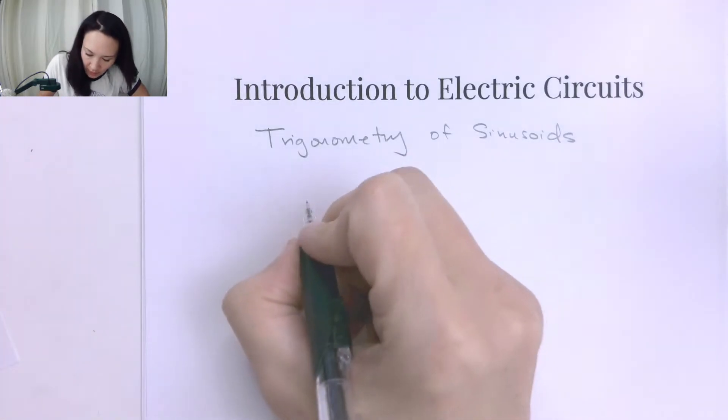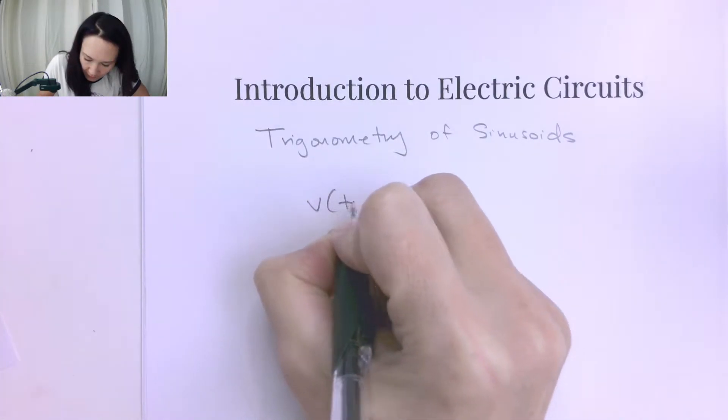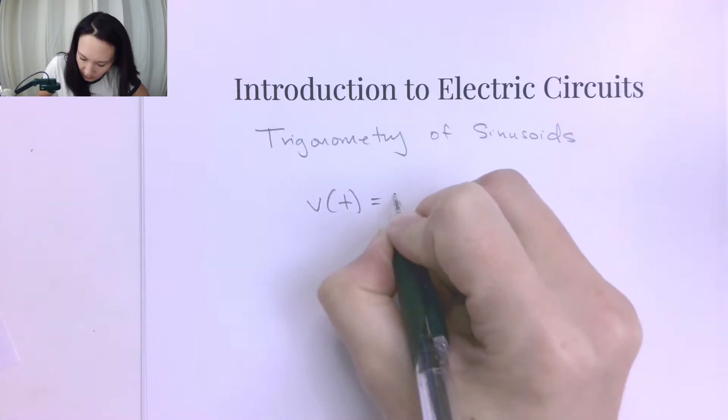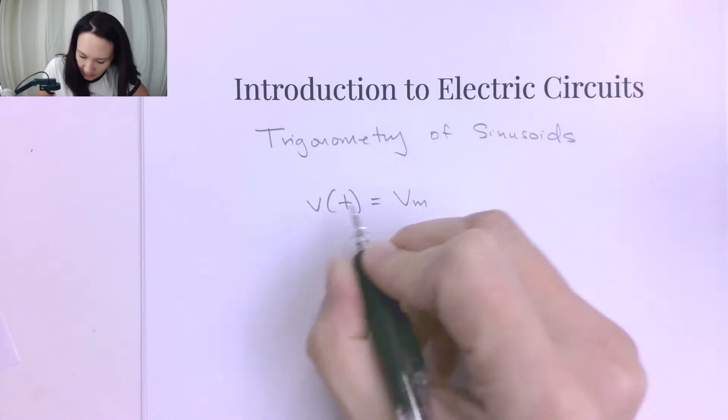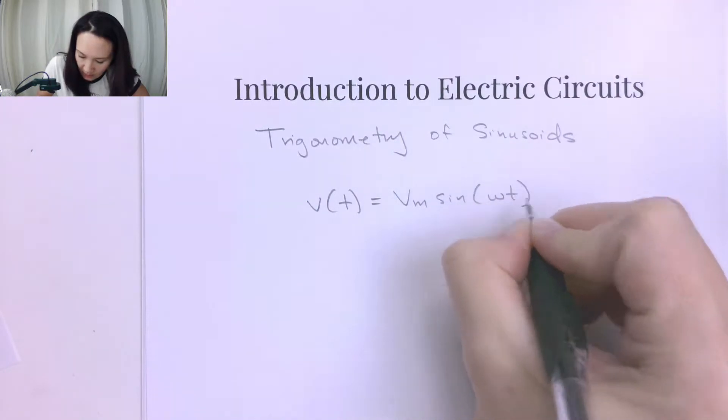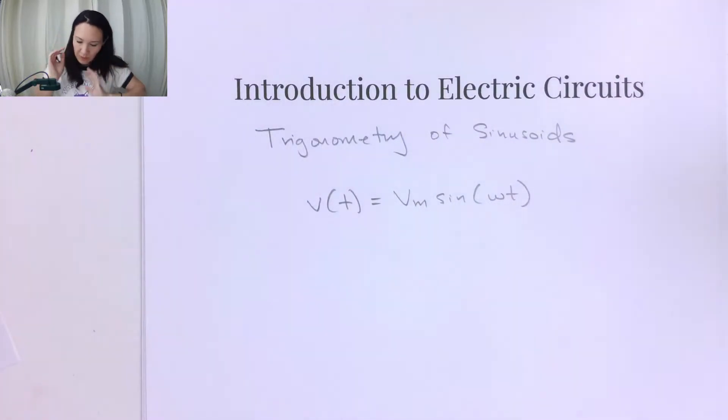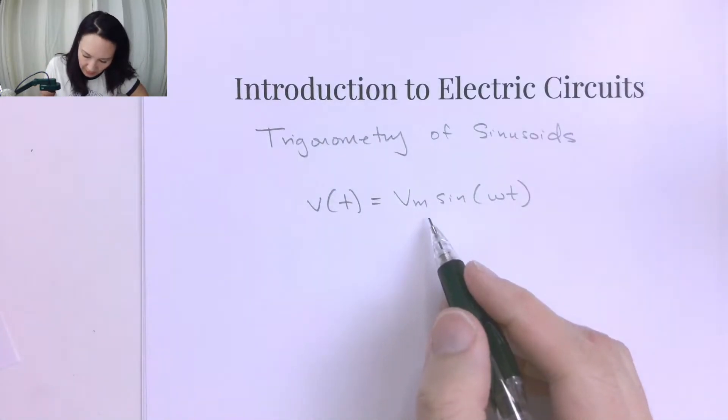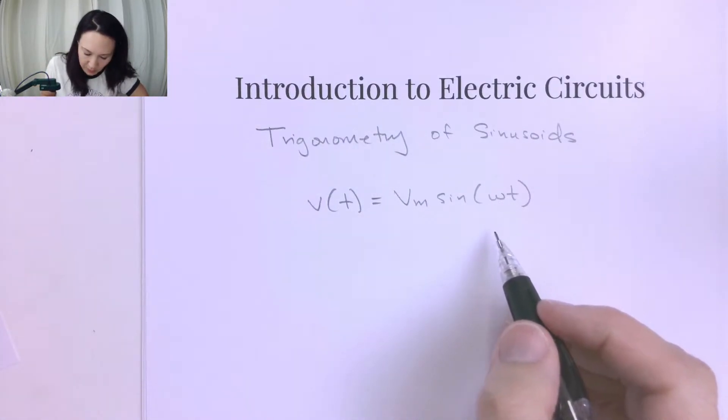So in the last video, we talked about how if we have a sinusoidal voltage signal, that can be written as V(t) = V_max sin(ωt). So if this is our maximum and this is the argument to the sine,